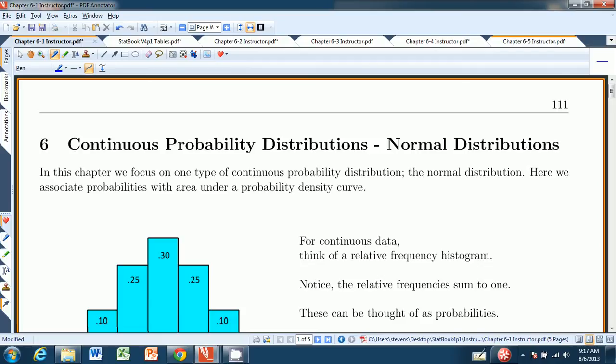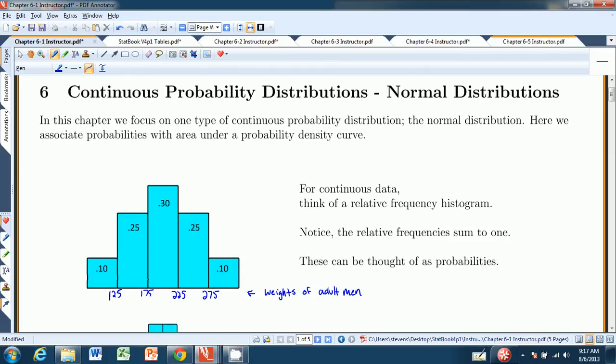So in order to start to make that conversion, let's consider a continuous random variable, such as the weights of adult men. And if we were to make a relative frequency histogram for that variable, then what we would do is break this up into classes. Here's the class from 125 to 175, a class from 175 to 225, and so on. These are the classes, and the bars represent the relative frequencies, and they're written in decimal as opposed to percentage for a reason that we'll get into in a second.